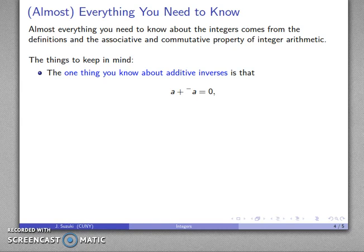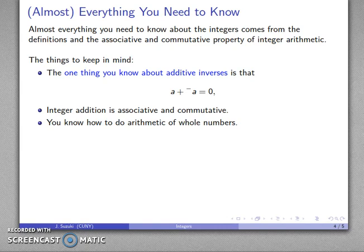And the only thing we have to keep in mind is that the additive inverse plus the number gives you zero. Integer addition is associative and commutative. And you should know how to do the arithmetic of whole numbers. If you don't know how to do the arithmetic of whole numbers, you won't be able to do the arithmetic of the integers.